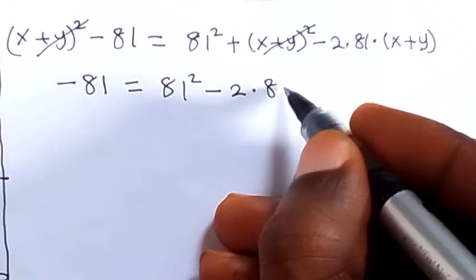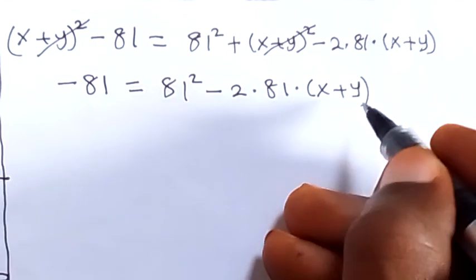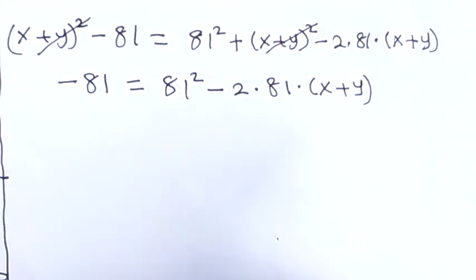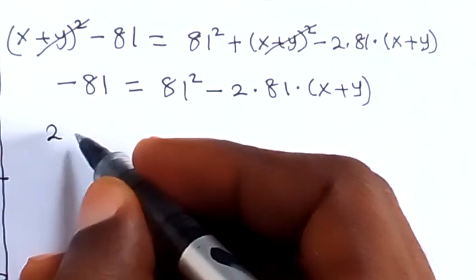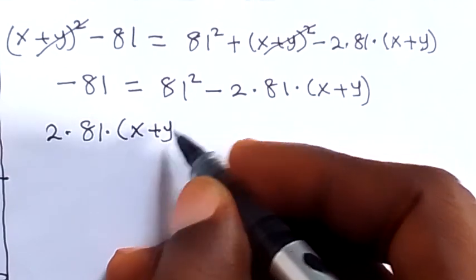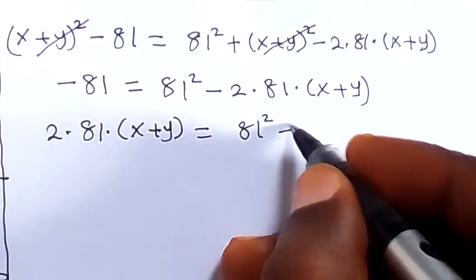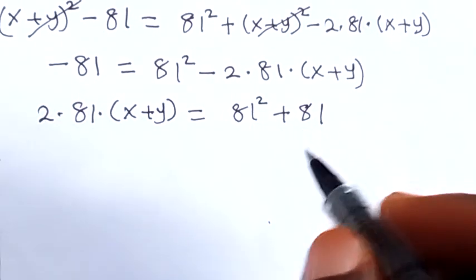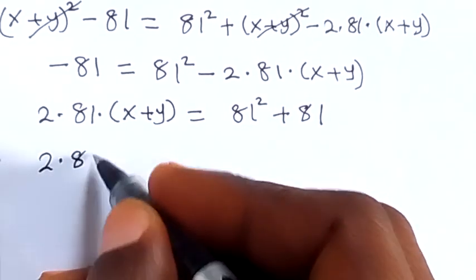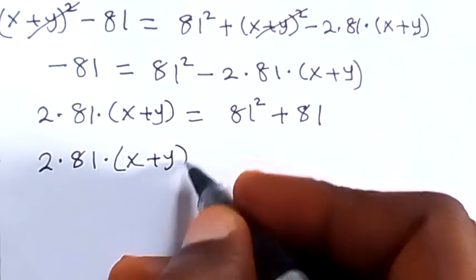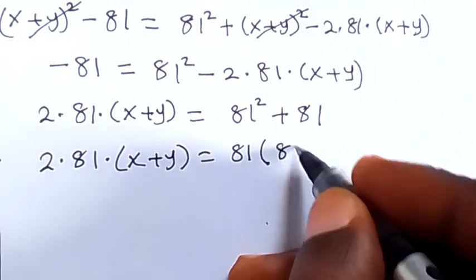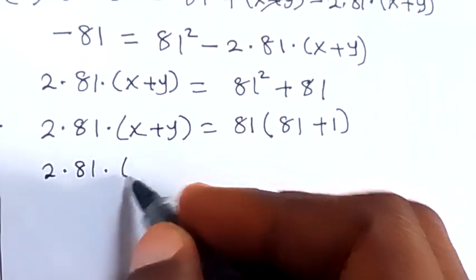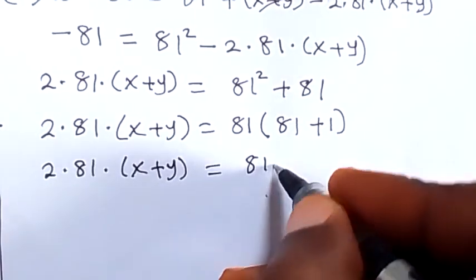Then minus 2 times 81 times (x + y). Let us take the minus 2 times 81 times (x + y) to the left side, and take minus 81 to the right side. The minus becomes plus and we have 2 times 81 times (x + y). Writing the right hand side and factoring it out: 2 times 81 times (x + y) equals 81 times (81 + 1), which is 81 times 82.